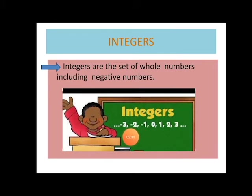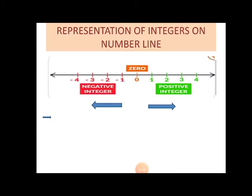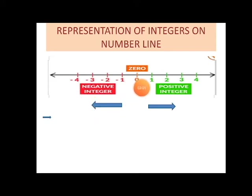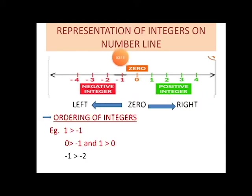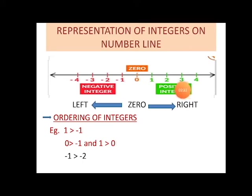Now let us learn about the representation of integers on a number line. Whenever we want to represent any number on the number line, we first draw a horizontal straight line and mark arrows on both end sides. At the center we mark zero, then to the right direction of zero we mark all the positive numbers, and to the left direction of zero we mark all the negative numbers, keeping them at an equal gap.